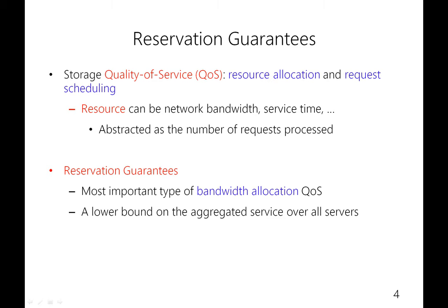QoS involves two aspects: resource allocation, that is how much of a resource to give a client, and scheduling those requests to enforce the allocation. In general, the resources can be network bandwidth or service time, and as the focus of this paper, we abstract a resource as the number of requests processed. Reservation guarantees is one of the most important types of QoS control — it is a lower bound on the aggregated service of all servers for each client.